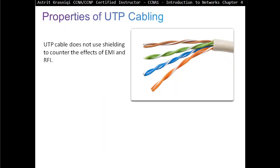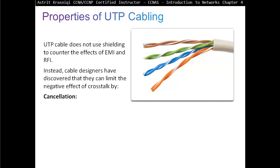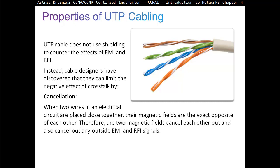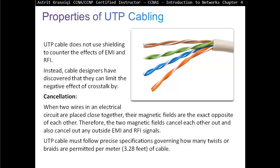Properties of unshielded twisted pair cabling: UTP cable does not use shielding to counter the effects of EMI and RFI — electromagnetic interference and radio frequency interference. Instead, cable designers discovered they can limit the negative effects of crosstalk by cancellation. When two wires in an electrical circuit are placed close together, the magnetic fields are the exact opposite of each other; therefore, the two magnetic fields cancel each other out, and also cancel out any outside EMI and RFI signals. UTP cable must follow precise specifications governing how many twists or braids are permitted per meter, which is 3.28 feet of cable.